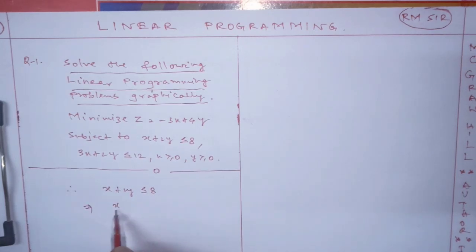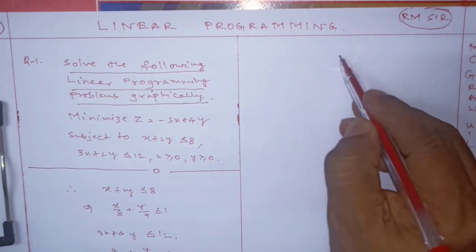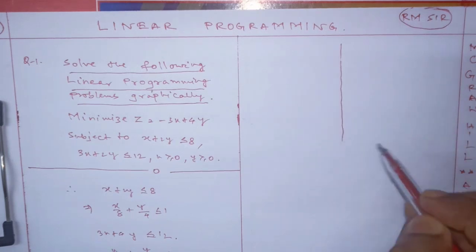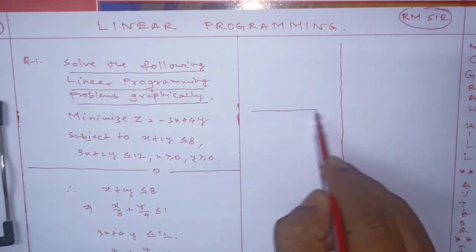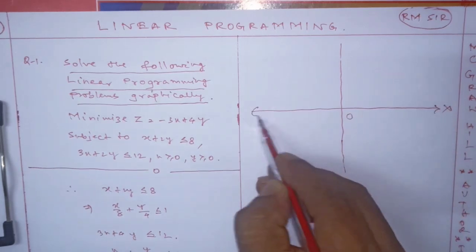The constraints are: x/4 plus y/3 is less than or equal to 1, and x is greater than or equal to 0, y is greater than or equal to 0. Now we draw the coordinate axis. This is coordinate axis - this is x-o-x dash and this is y-o-y dash.